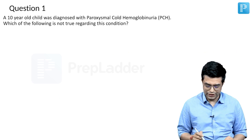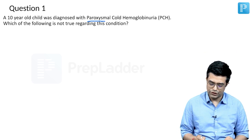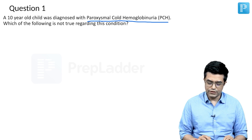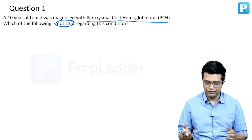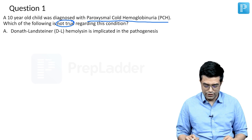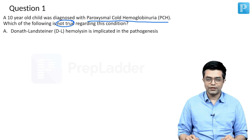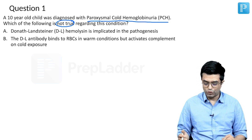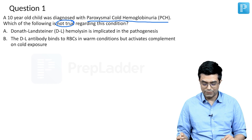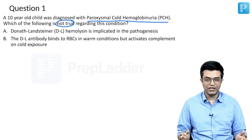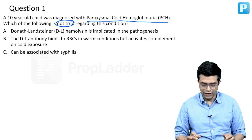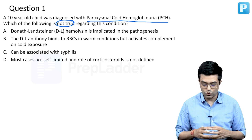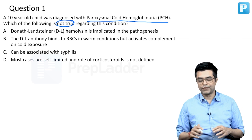Question number one: a 10-year-old child was diagnosed with PCH, that is Paroxysmal Cold Hemoglobinuria. Which of the following is not true regarding this condition? Option A: Donath-Landsteiner hemolysin antibody is implicated in pathogenesis. Option B: this antibody binds to RBC in warm conditions but activates complement on cold exposure, leading to hemolysis. Option C: it can be associated with syphilis. Option D: most cases are self-limited and the role of corticosteroids is not defined.